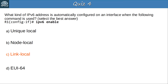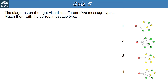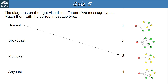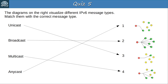Question 5: The diagrams visualize different IPv6 message types — match them with unicast, broadcast, multicast, and anycast. Unicast is 3 — from the source to one specific destination. Broadcast is 2 — from the source to all possible destinations. Multicast is 4 — from the source to multiple destinations. And anycast is 1 — from the source to one of multiple possible destinations.